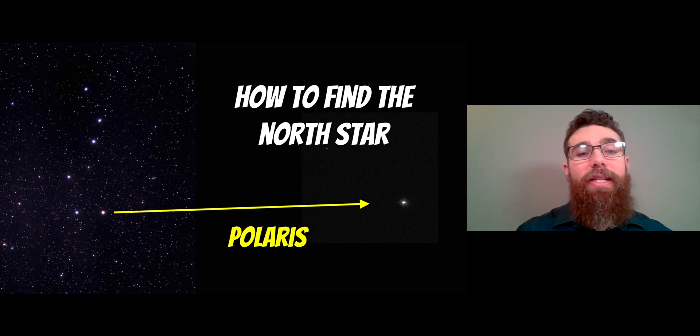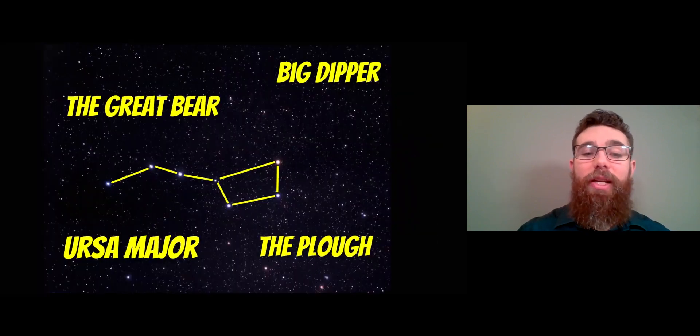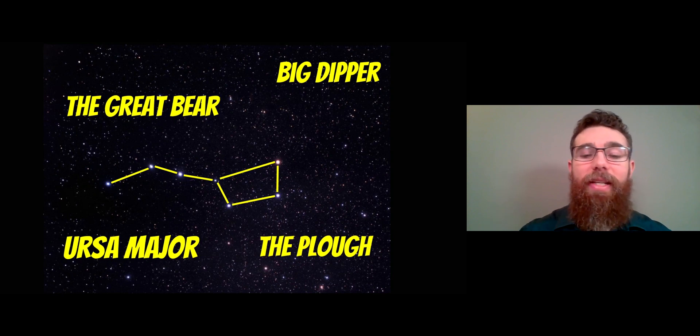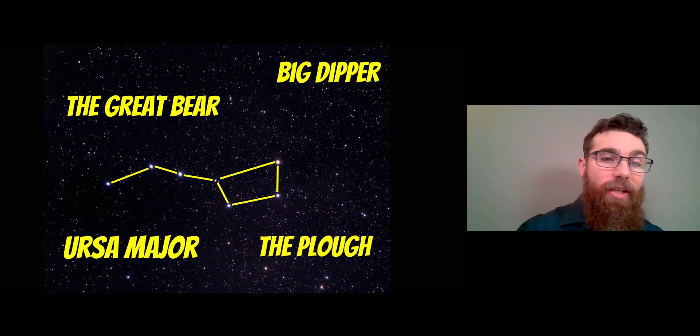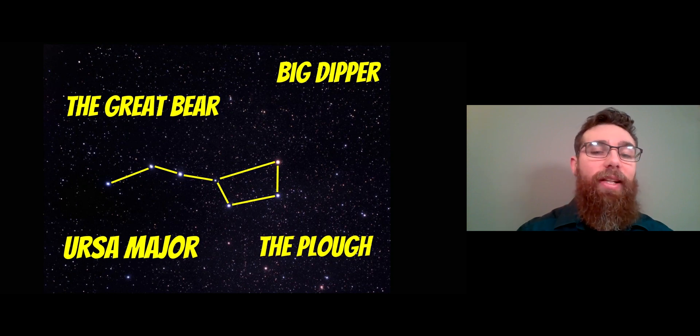The first thing you need to do when trying to find Polaris or the North Star is to look for this constellation made of seven bright stars. You can see this fairly easily even if you don't have very good seeing conditions. It has a few different names: the Big Dipper, the Plough, Ursa Major, the Great Bear, and a few variations of that. But the core stars in all of those are these seven bright stars, and it looks a little bit like a saucepan with a handle. It's fairly easy to see.